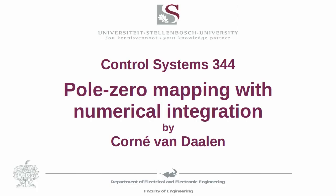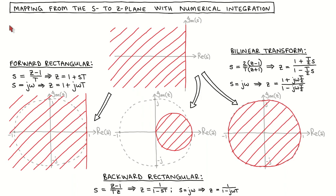When we use numerical integration to discretize a continuous time controller, we in effect define a mapping of poles and zeros from the s-plane to the z-plane. In today's video, we investigate the mappings defined by the three numerical integration rules we considered in a previous video: the forward rectangular rule, the backward rectangular rule, and the bilinear transform.